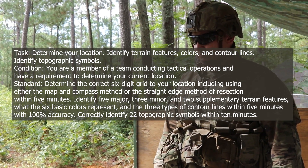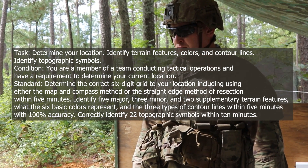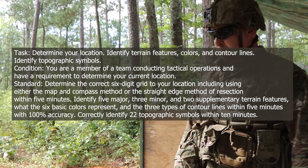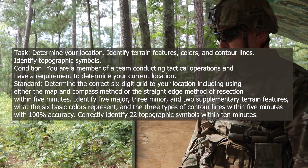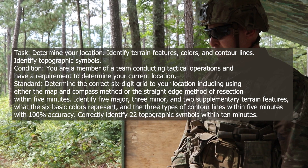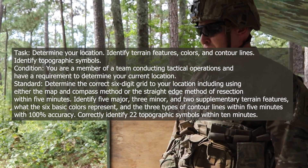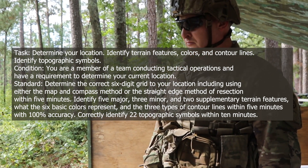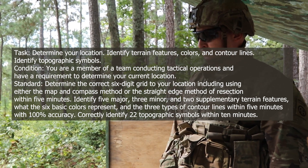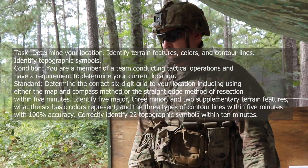Condition: you are a member of a team conducting tactical operations and have a requirement to determine your current location. Standard: determine the correct 6-digit grid to your location using either the map and compass method or the straight edge method of resection within 5 minutes. Identify 5 major, 3 minor, and 2 supplementary terrain features, what the 6 basic colors represent, and the 3 types of contour lines within 5 minutes with 100% accuracy. Correctly identify 22 topographic symbols within 10 minutes.